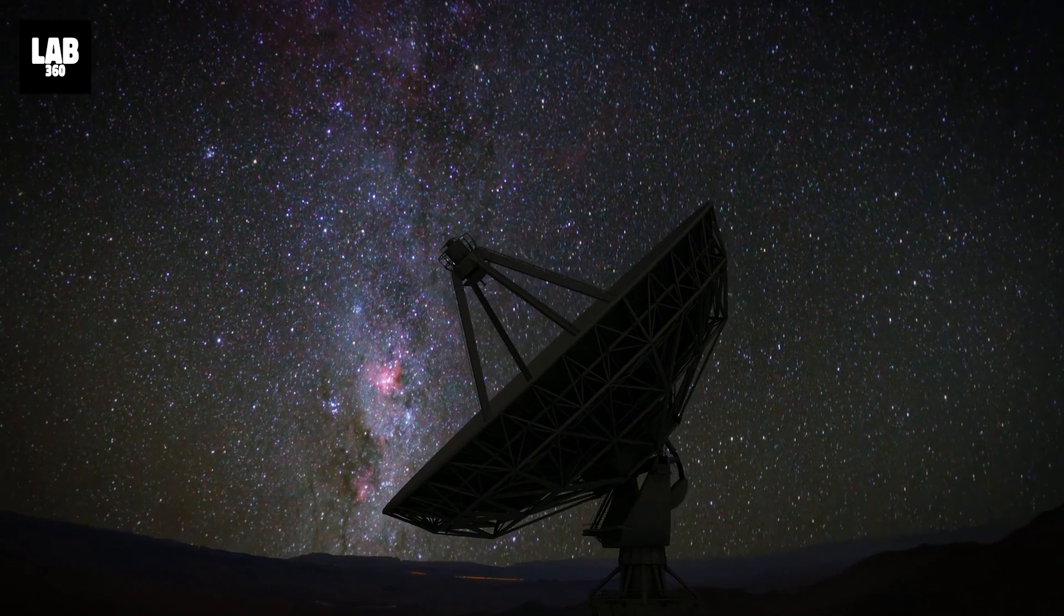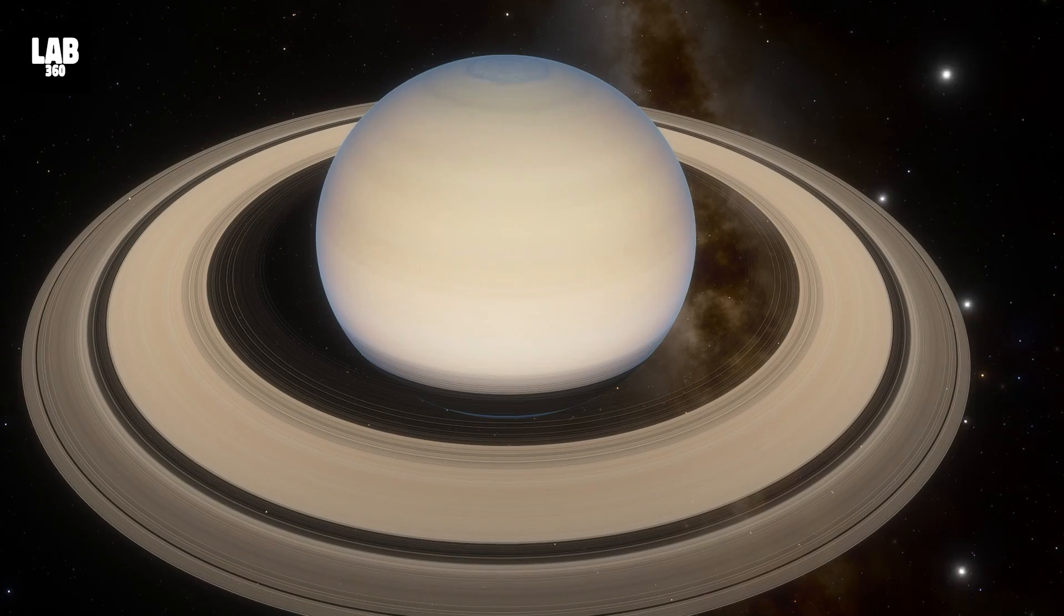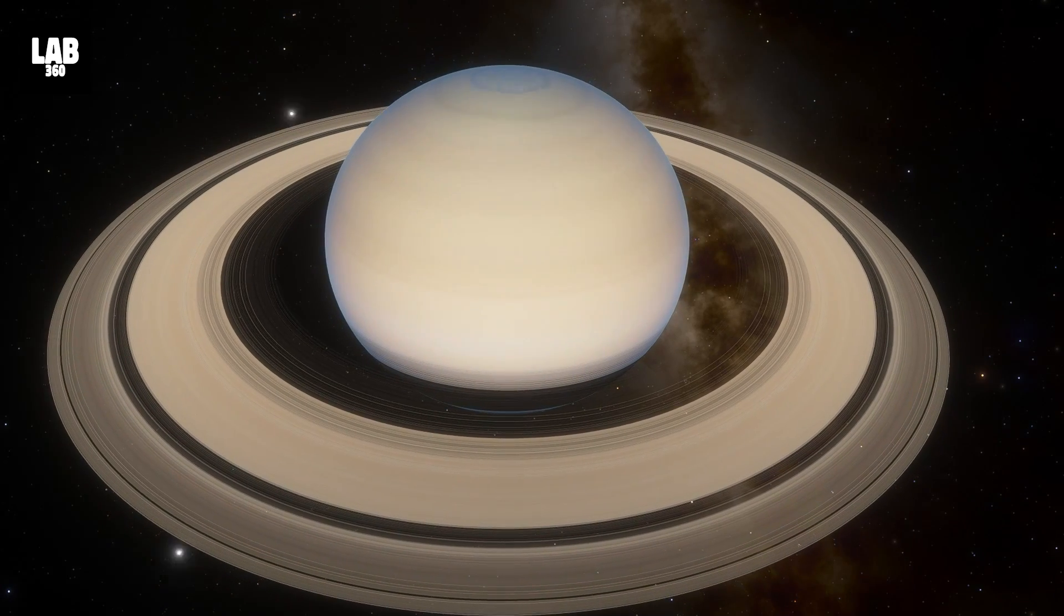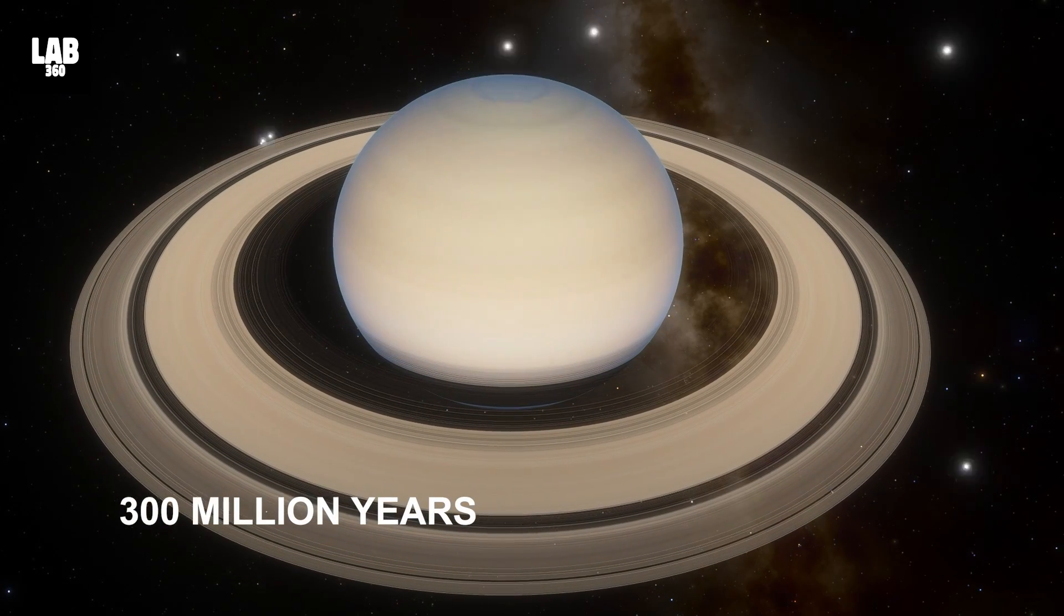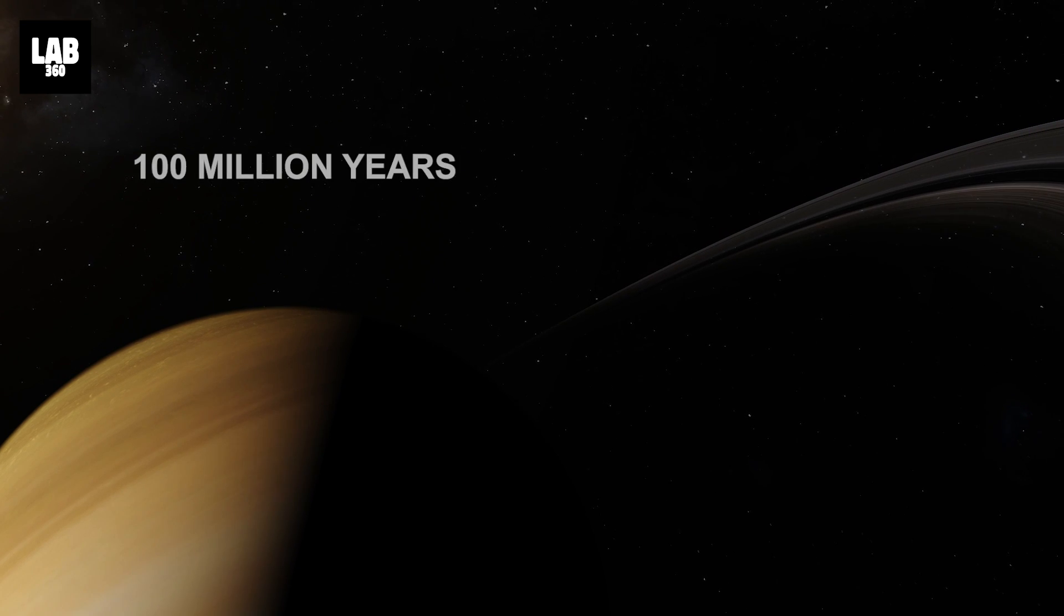While this prediction is likely to come true, it is thankfully not going to be in our lifetime. Scientists believe that it will take at least 300 million years for Saturn to lose all its rings. However, it will lose its core rings in 100 million years.